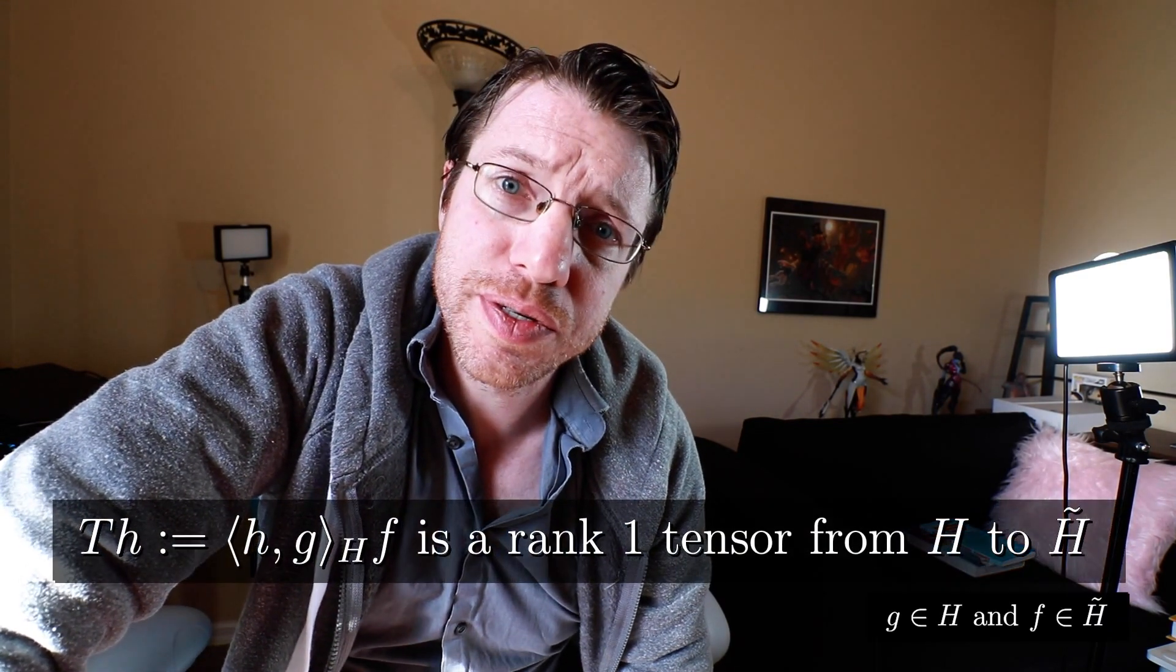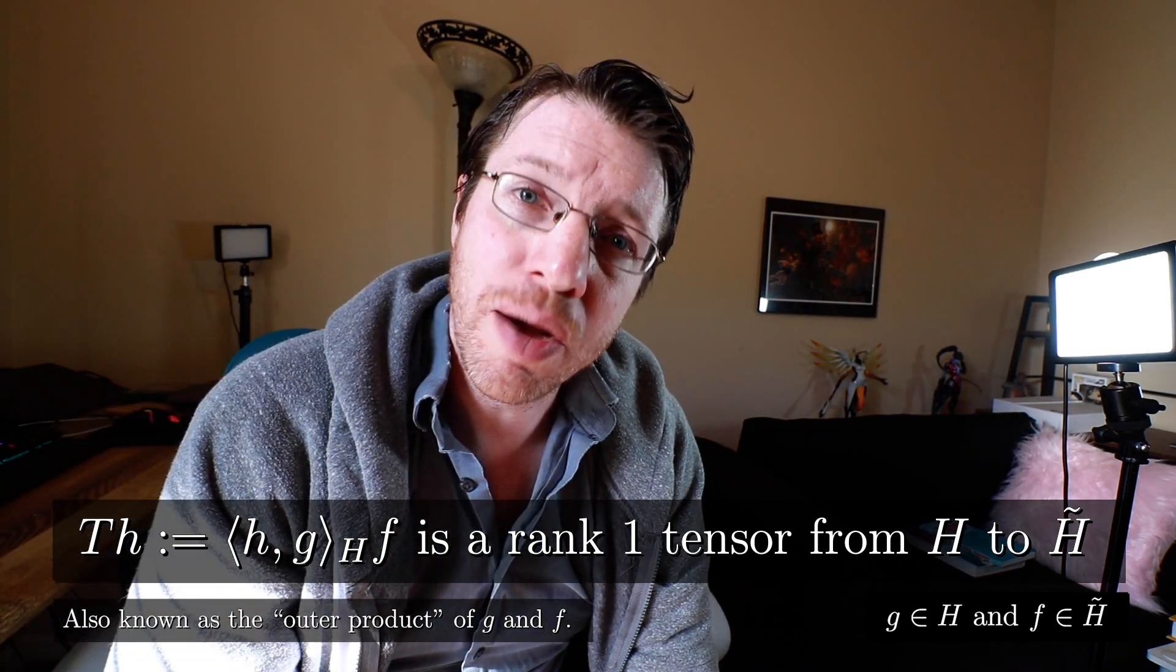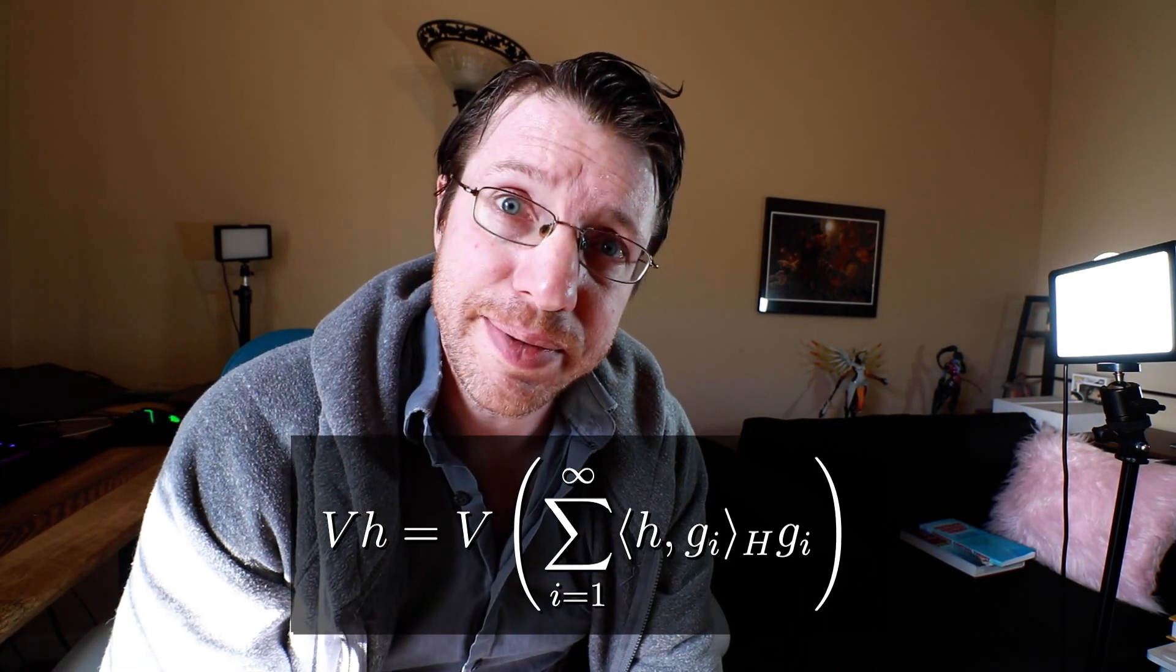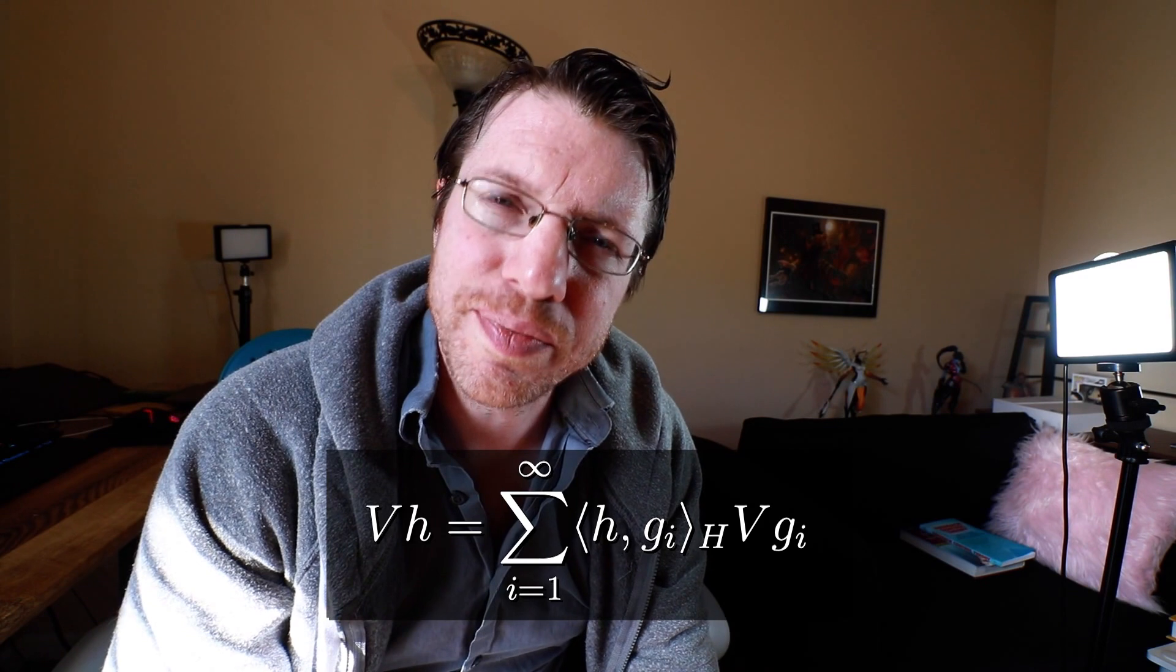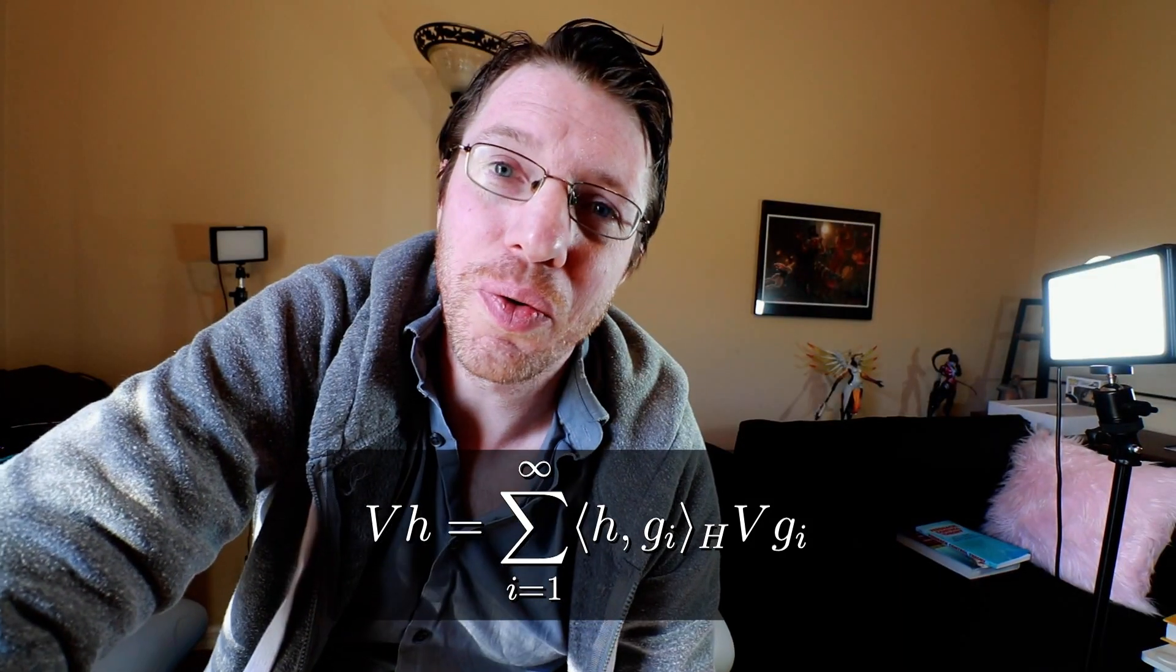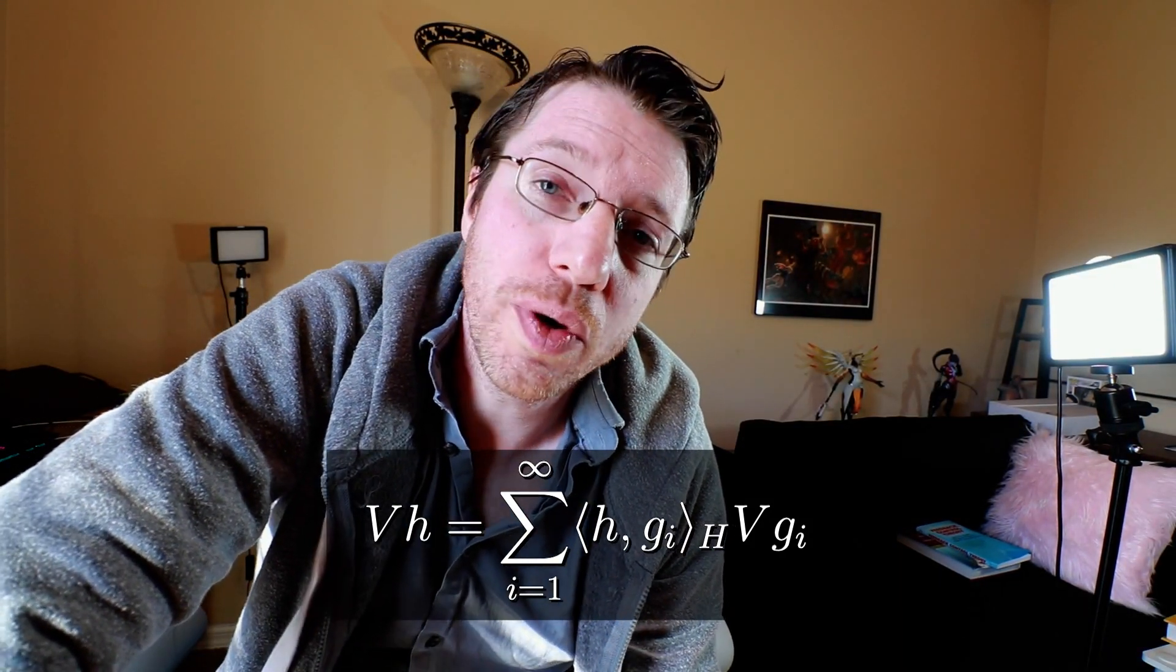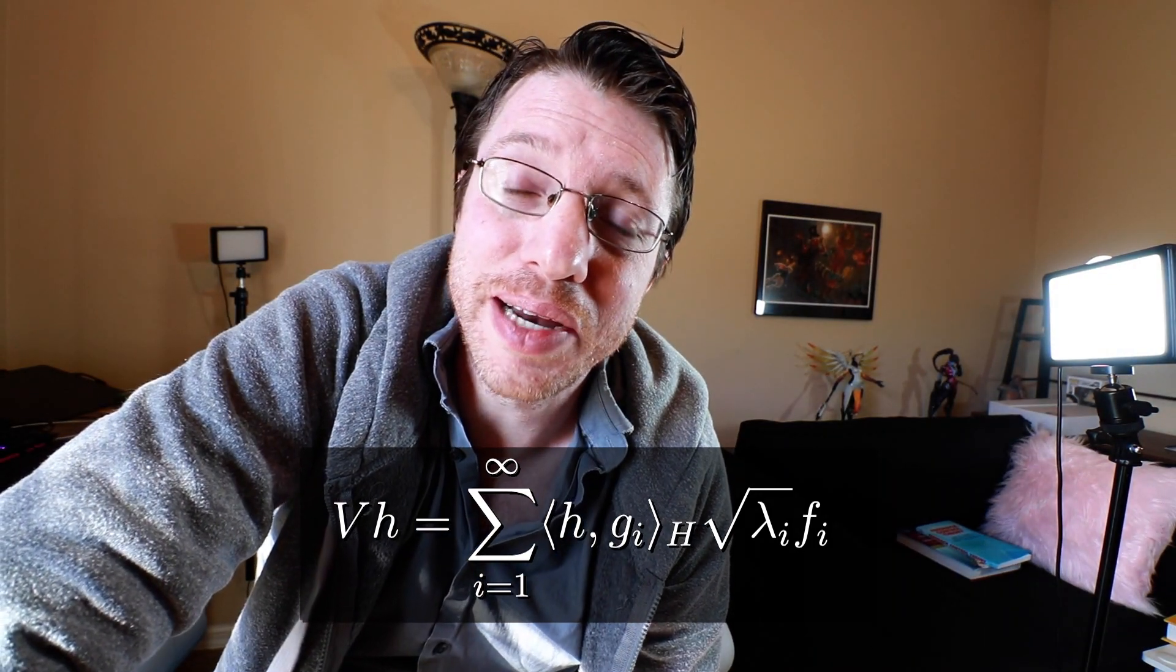So now how does this get us the singular value decomposition? The singular value decomposition of an operator is a sum of rank one tensors. So basically I'm saying that if V is applied to some H, what we're going to have is that our operator V is going to basically look at the expansion of our function H in terms of Gi. You apply this operator to this decomposition. And so then you see that V acting on little H is equal to the sum of the inner product between H and Gi inside of H. And so now what is V times Gi? That is just our F times the square root of Lambda I. And there you go. That is the singular value decomposition for compact operators.